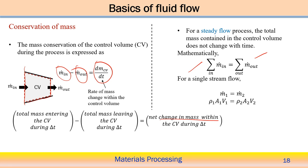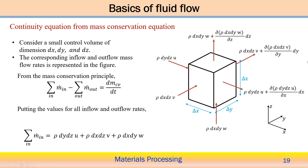In the steady state situation, the rate of mass change within the control volume is zero, so mass in equals mass out. For a single stream flow: m-dot-1 equals m-dot-2. The mass flow rate is rho times A times V. So at the inlet: density rho1, cross-section area A1, velocity V1; at the outlet: rho2, A2, V2. Therefore rho1·A1·V1 = rho2·A2·V2. This is how we utilize the conservation of mass in a fluid system.